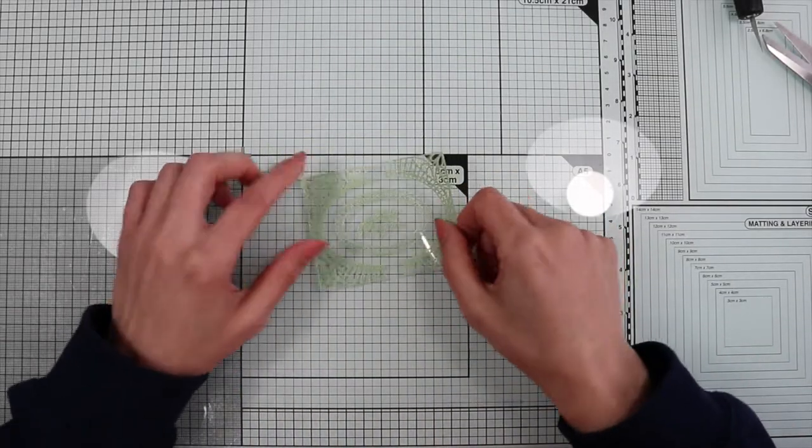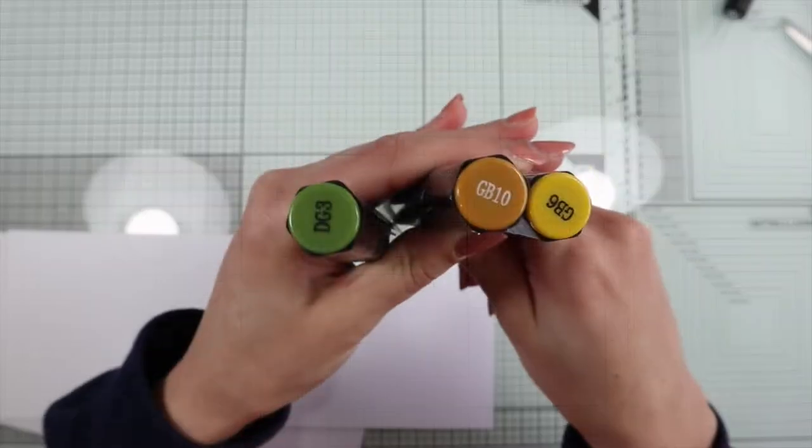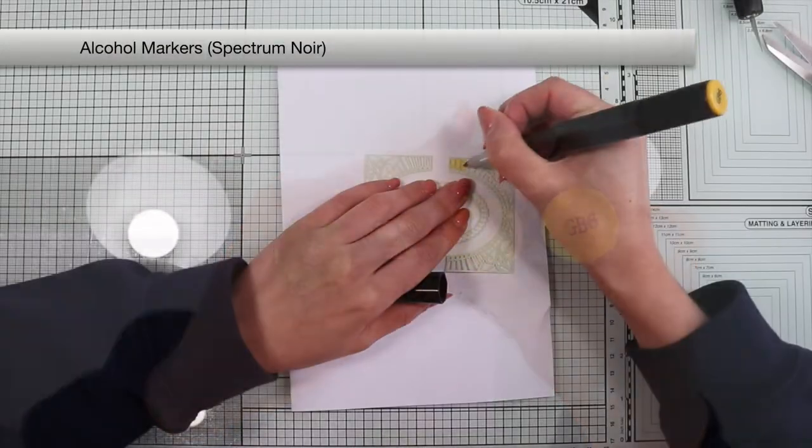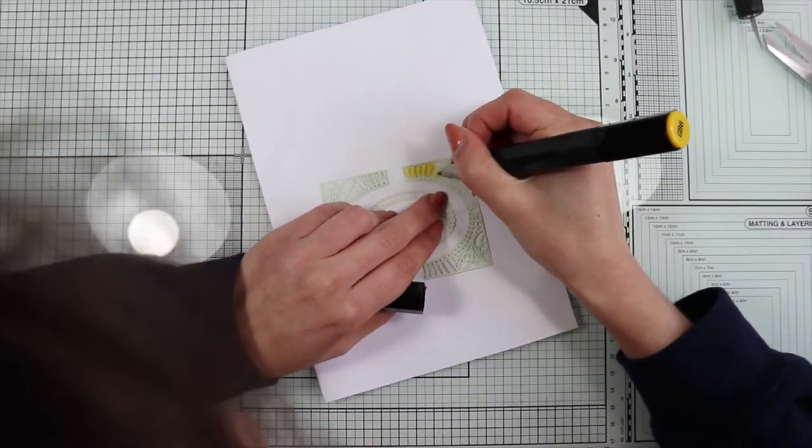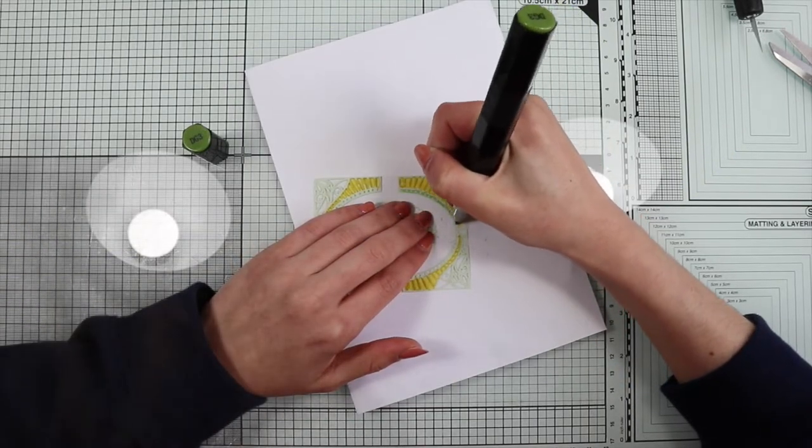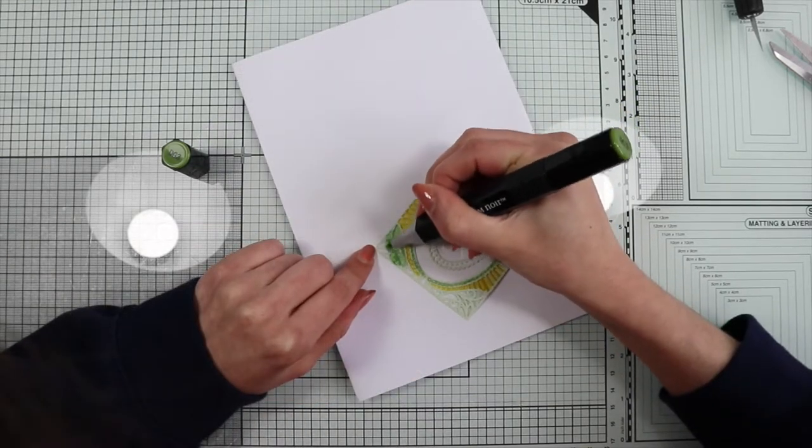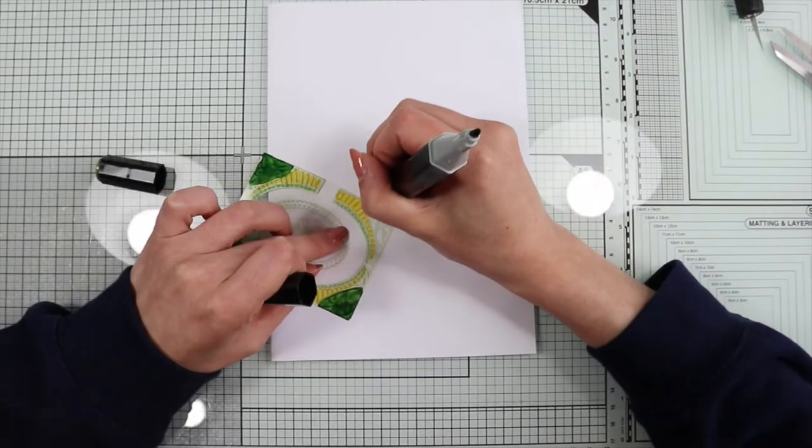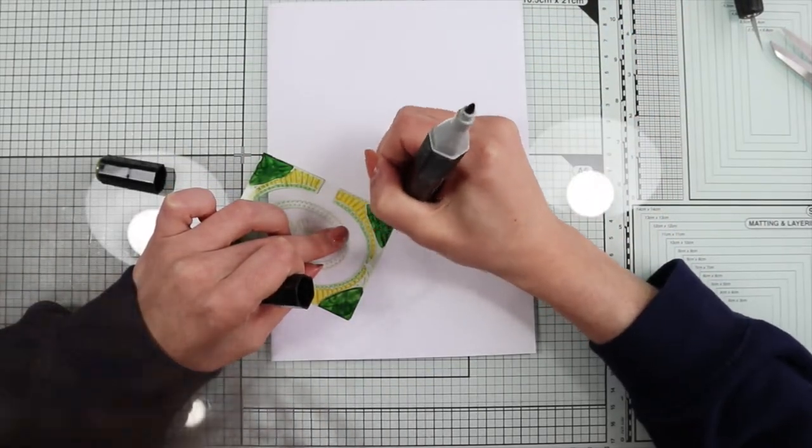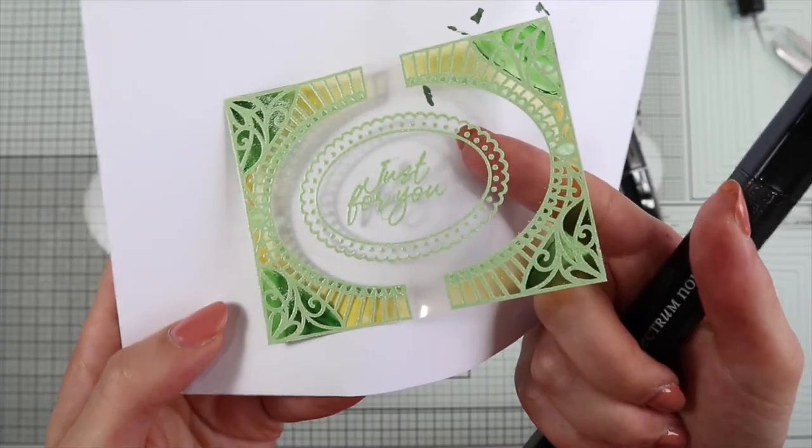For the next card I propose you one of my favorite techniques. A see-through card with a stained glass effect. To achieve this effect I'm going to color the back of my embossed panel with alcohol markers. And here we go! That's so beautiful!